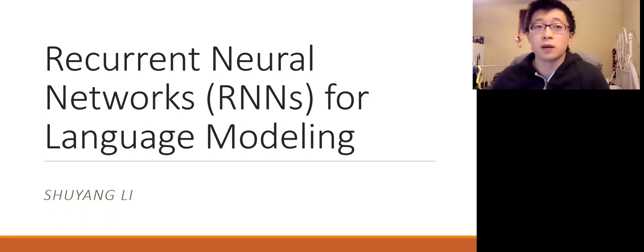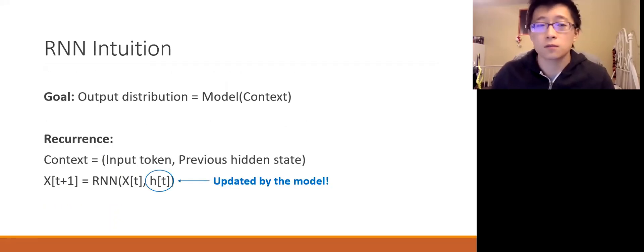So today I'll be talking about recurrent neural networks or RNNs for language modeling. Let's first get an idea behind the intuition for recurrence. Recall that in a language model we're trying to find an output distribution over our vocabulary, and our model generates that distribution given some context like a string of words. The idea of recurrence is that at every time step you don't need to provide your model with this ever-increasing sequence of words.